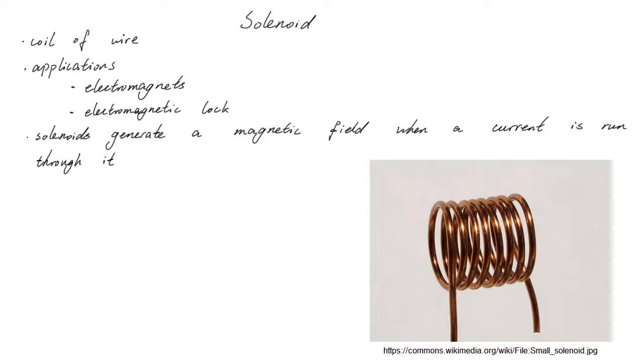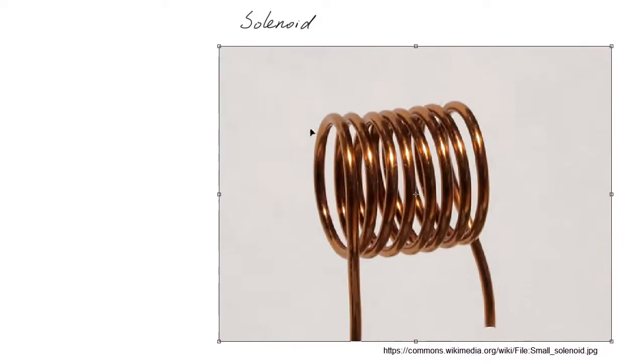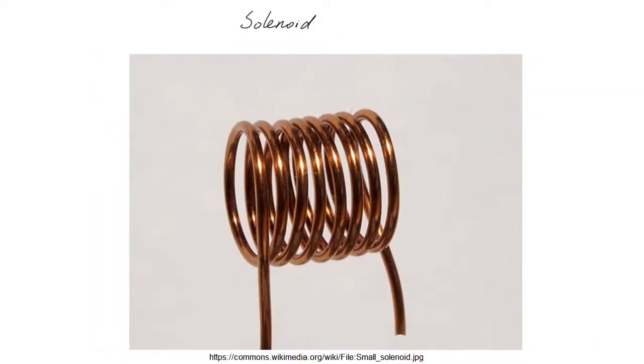We analyze the magnetic field around a loop by looking at the magnetic field due to each part of the loop and then adding them together to get the overall magnetic field. We can do the same to get the magnetic field of a solenoid. We know the magnetic field of a loop now, so we don't need to split the solenoid into many small sections.